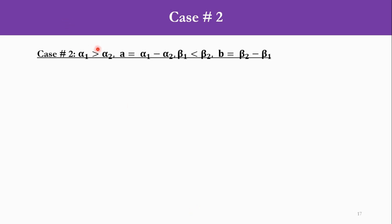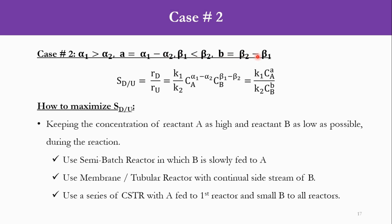Case 2: α1 > α2 (A = α1 - α2) and β1 < β2 (B = β2 - β1). The instantaneous selectivity becomes K1/K2 * Ca^A / Cb^B, since β1 < β2 places Cb in the denominator. This means we must maximize the concentration of reactant A while minimizing the concentration of reactant B. Accordingly, use either a semi-batch reactor in which B is slowly fed to A, a membrane or tubular reactor with a side stream of B, or CSTRs in series with A fed to the first reactor while B is fed to each reactor.